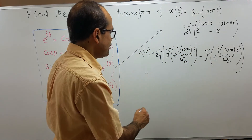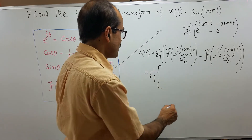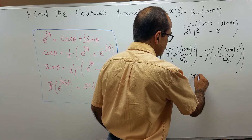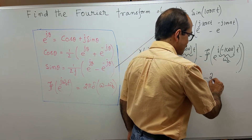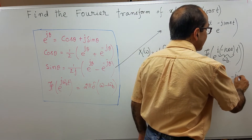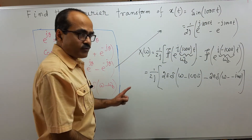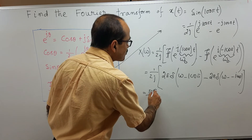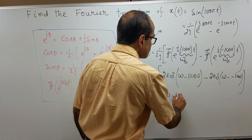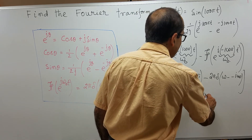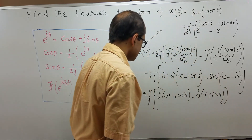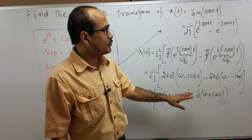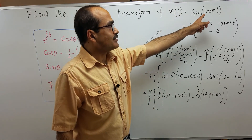So finally, 1 over 2j times 2π·δ(ω − 100π) minus 2π·δ(ω − (−100π)). Taking 2π out, 2π over 2j gives π over j. So it is π over j times δ(ω − 100π) minus δ(ω + 100π). Therefore, X(ω) = π/j · [δ(ω − 100π) − δ(ω + 100π)] is the Fourier transform of the periodic signal x(t) = sin(100πt).